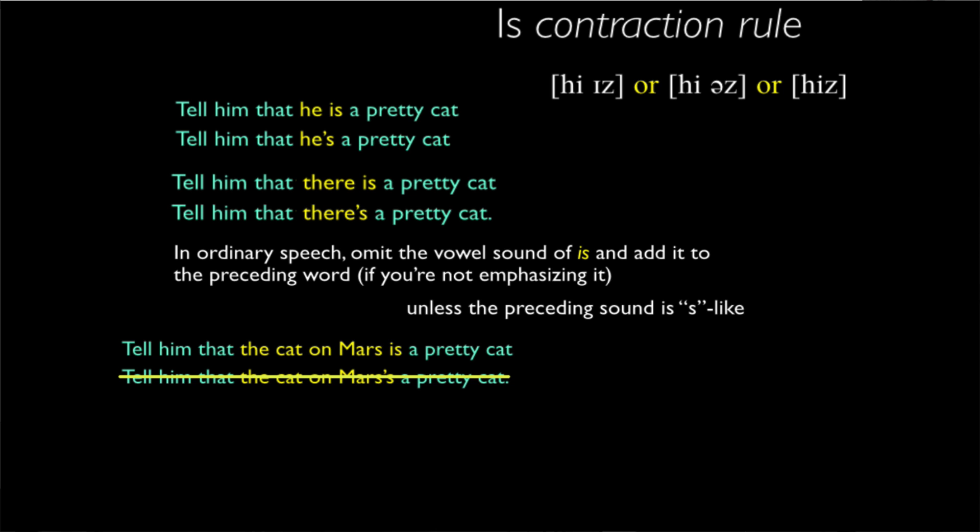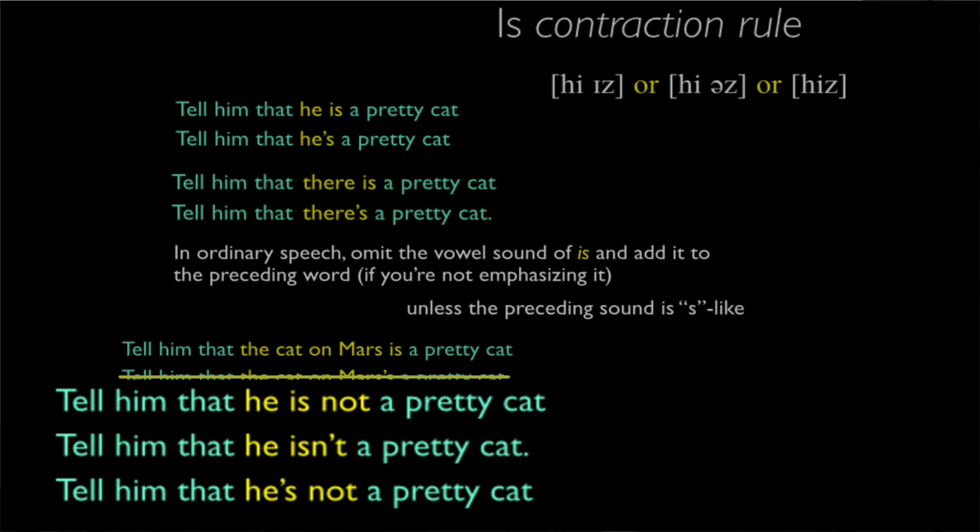And then we can go a bit farther to illustrate the actual complexity of our knowledge of the contraction phenomenon. We notice that there's a possibility for two contraction rules to interact with each other. There's a rule that reduces 'not' to 'n't' by taking its vowel away and glomming it on to the preceding word as in 'tell him that he isn't a pretty cat.'